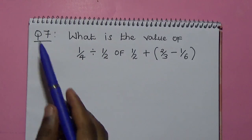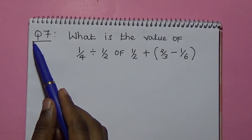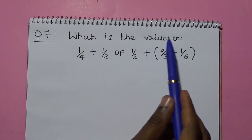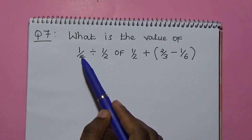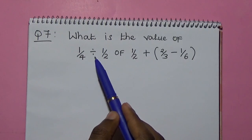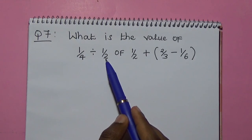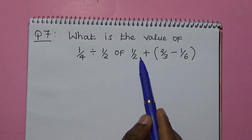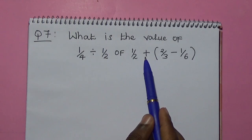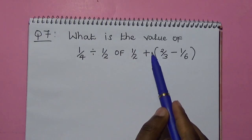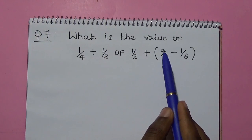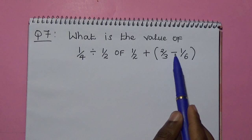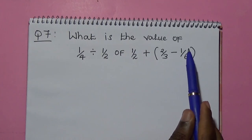We look at question number 7. What is the value of a quarter divided by a half of a half, plus into brackets 2 over 3 minus 1 over 6. We close the brackets.